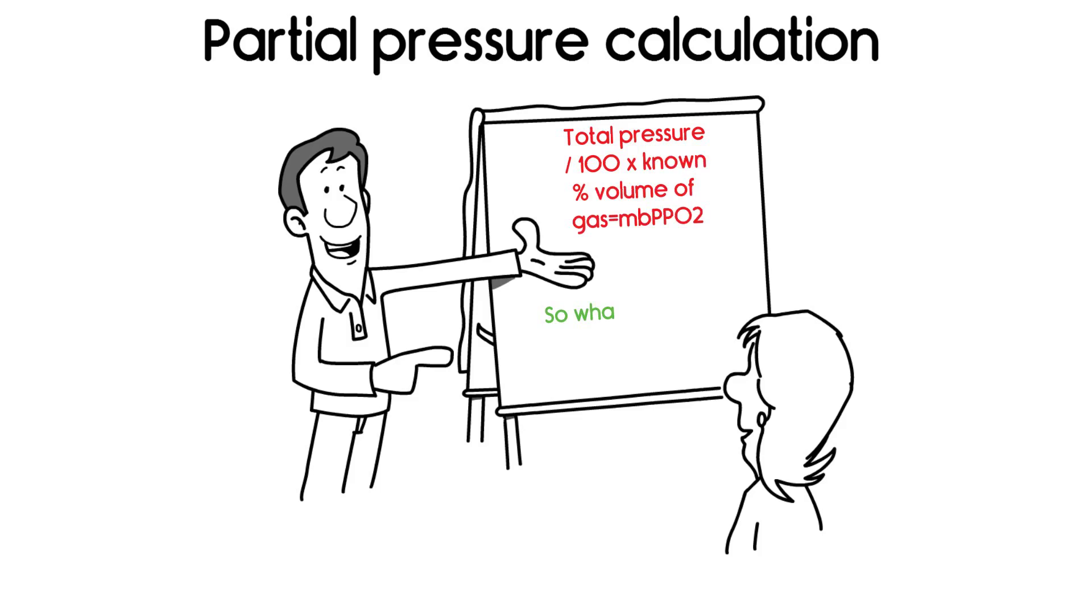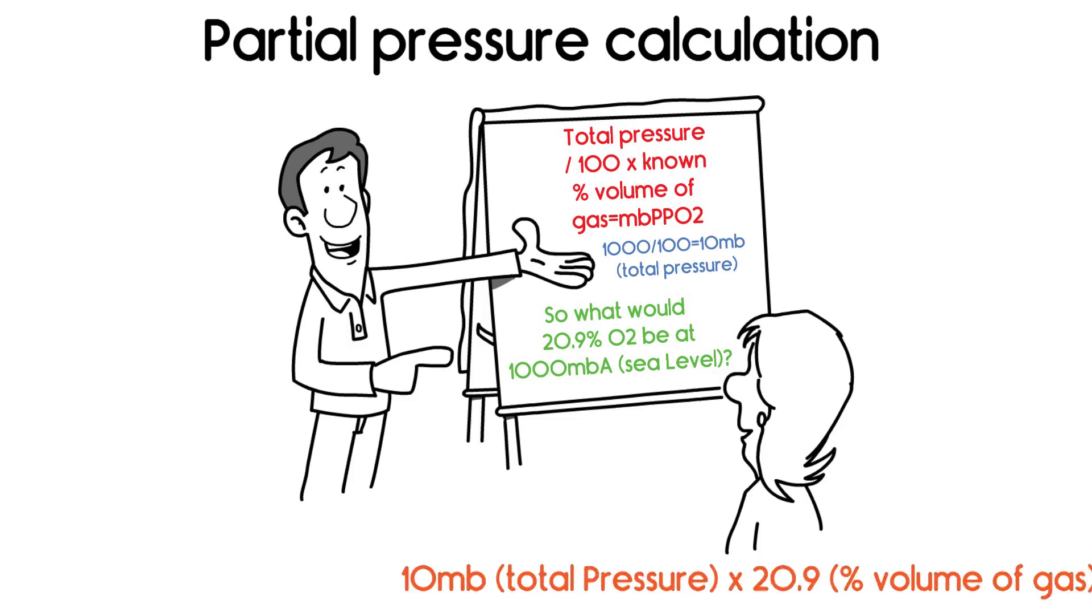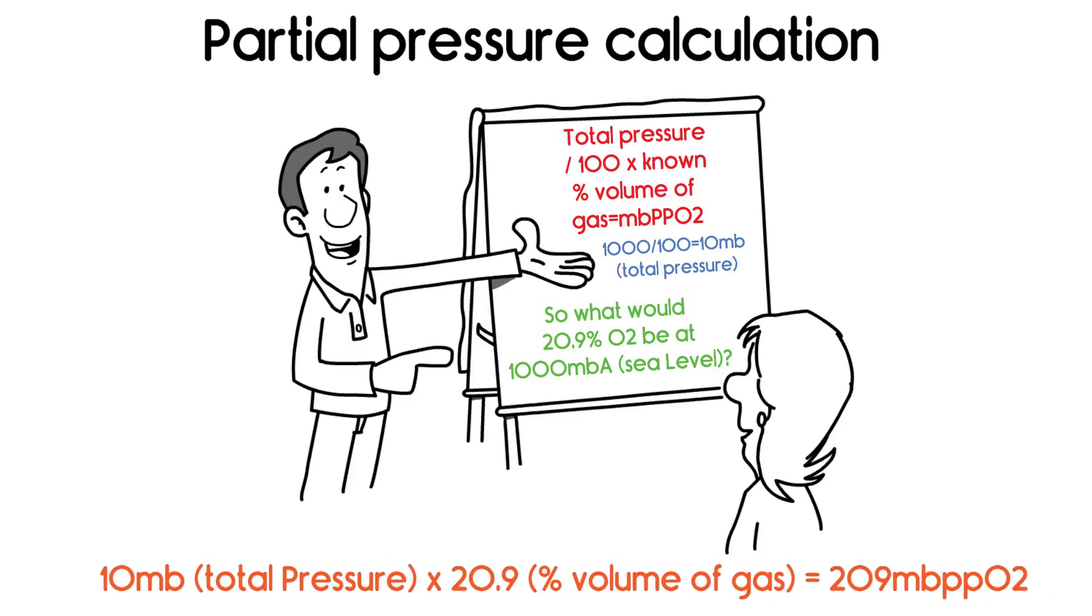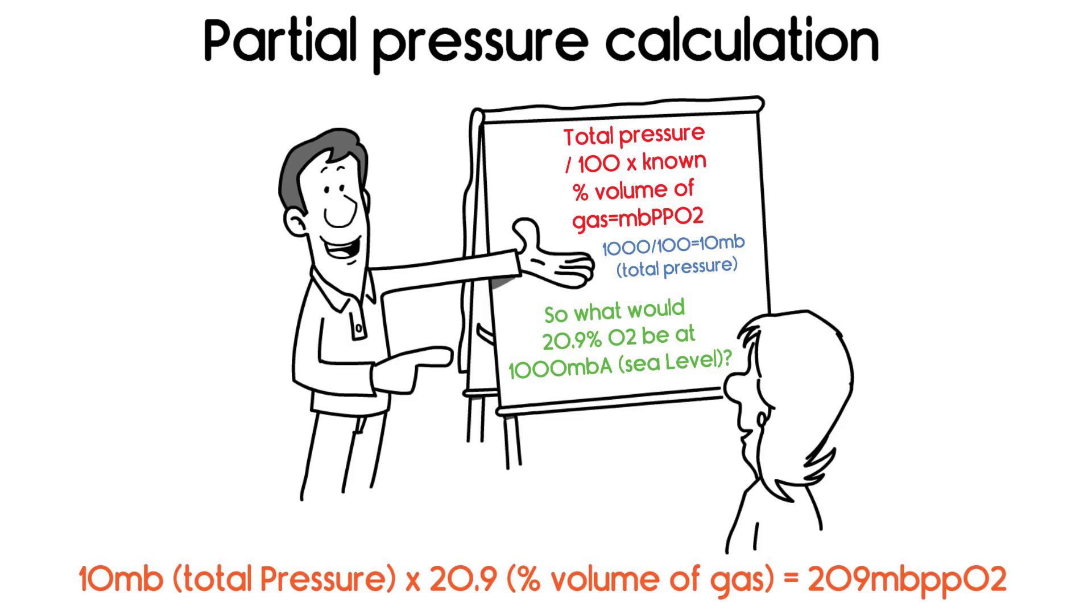So, what would 20.9% O2 be at 1000 Mba sea level? 1,000 divided by 100 times 20.9 equals 209 MbPPO2.